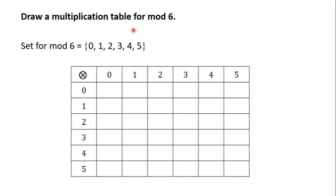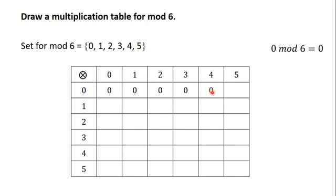The operation is multiplication and the modulus is 6, so we are going to multiply these numbers in mod 6. The first one is 0 times 0. 0 times 0 is 0, and 0 mod 6 is 0. In fact, in the first row, all the numbers are 0.